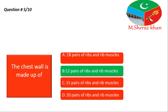So the right answer is 12 pairs of ribs and rib muscles. Exactly — yani ke jo lungs hain wo basically chest cavity ke andar maujood hain, aur unko jo protect kar rahi hai wo basically rib cage kar rahi hoti hai. Rib cage jo hai wo 12 pairs of ribs se bani hoti hai, aur phir uske andar muscles hoti hain jinhein hum rib muscles kehte hain. So the right answer is option B.